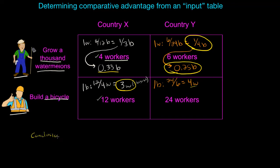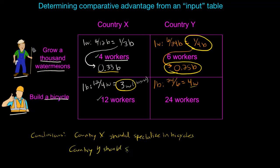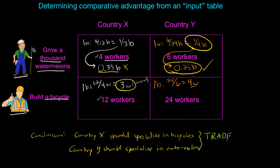Based on these calculations we can come to the following conclusions. Country X should specialize in the production of bicycles because it has the lower opportunity cost compared to Country Y. Country Y should specialize in the production of watermelons since it can produce watermelons at a lower opportunity cost of 0.25 bicycles per watermelon, compared to Country X which must give up 0.33 bicycles per watermelon. The two countries should trade with one another so that both can enjoy the good they are not producing domestically at a lower opportunity cost than they could have produced it at domestically.